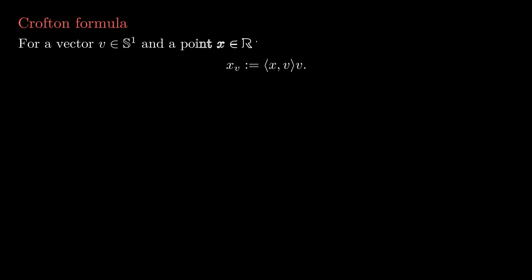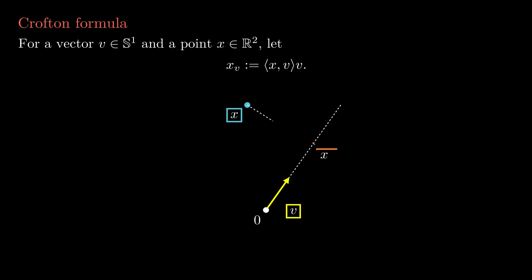Hello everyone! Today we will talk about the Crofton formula, a very useful formula to compute the length of a curve. First, let's talk about projections. If we have a direction v and a point x in the plane, we will write x_v for the projection of x in the direction v. It is found by rescaling v by the inner product between x and v.